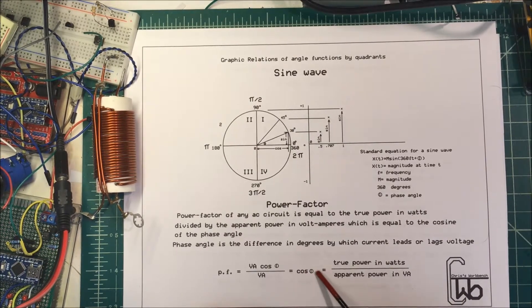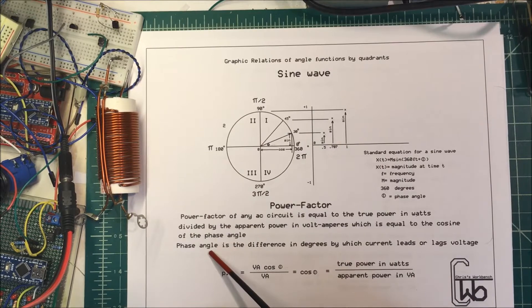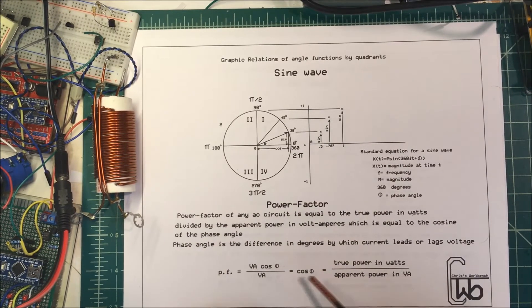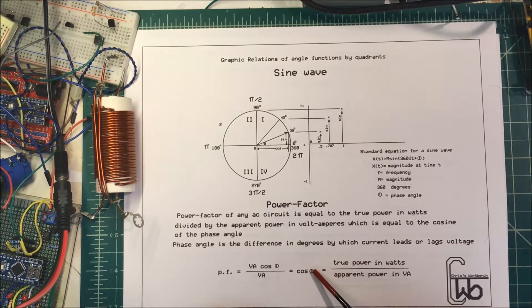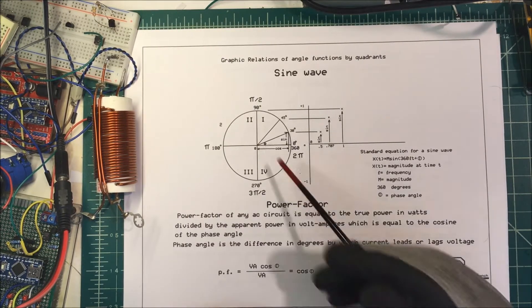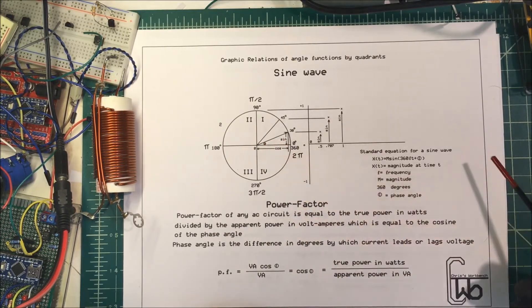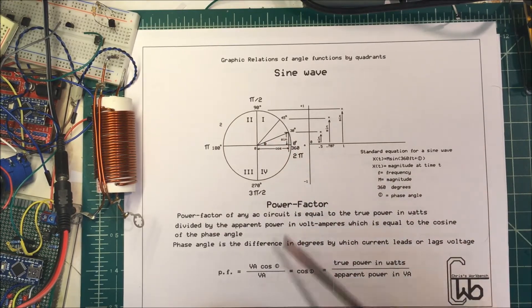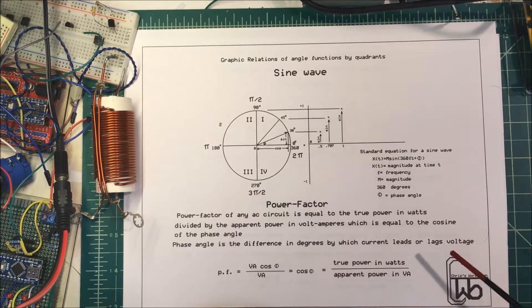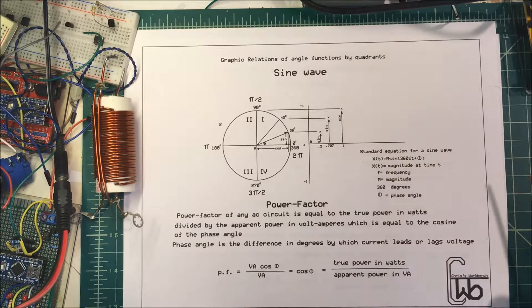The power factor is just the cosine of the phase angle. Note that the phi symbol is a circle with a vertical line through it, while theta is a circle with a horizontal line — two different angles. Now let's go over to Excel and draw a couple of sine waves.